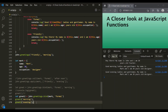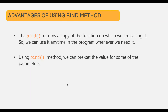This is one advantage of using bind method — we can return a function where the value of some parameters are preset. The advantages of bind method are: first, since bind returns a copy of the function, we can use it anytime in our program whenever we need it. Second, we can preset the value of some of the parameters when using bind method. So this is what bind method is in JavaScript.